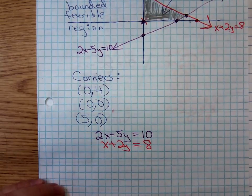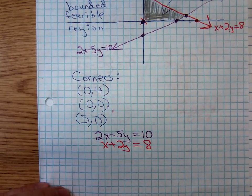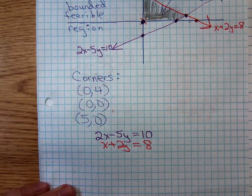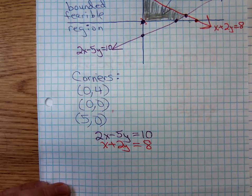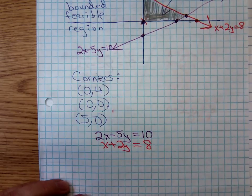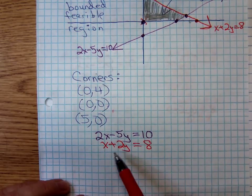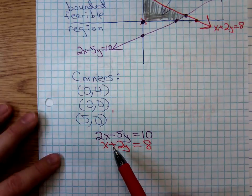Well, we saw matrix methods — we could use Gauss-Jordan elimination — but I can't imagine anyone would want to use matrix methods to find where these two lines intersect. Do y'all recall elimination and substitution?